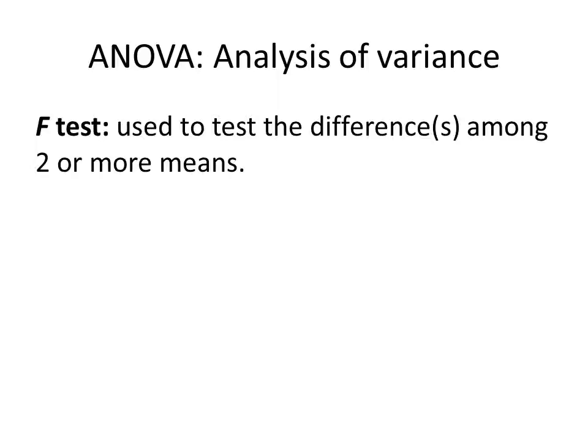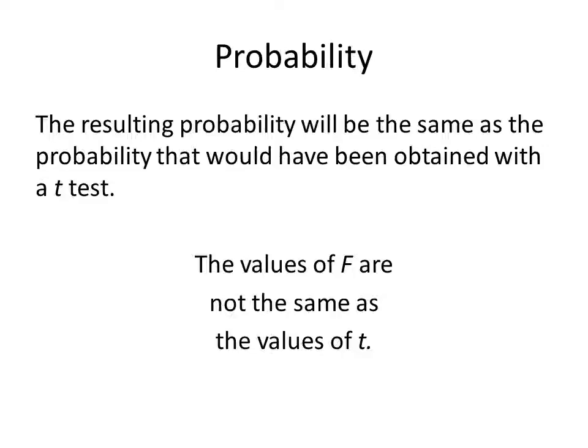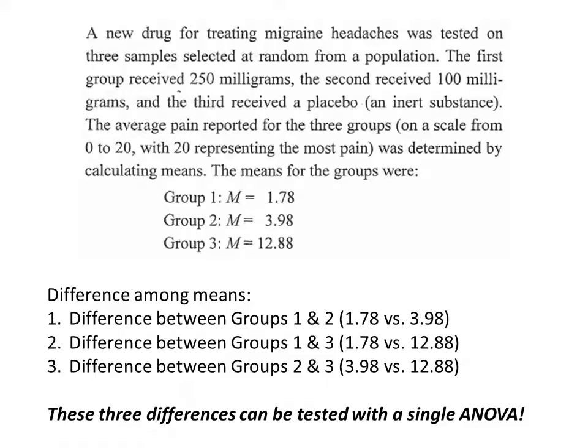An F-test can be used to test the difference among two or more means. Similar to the t-test, it can test the difference between two means, and when this is done, the probability will be the same as if you had used the t-test. However, the value of F will not be the same as the value of t — that is an important concept to remember.